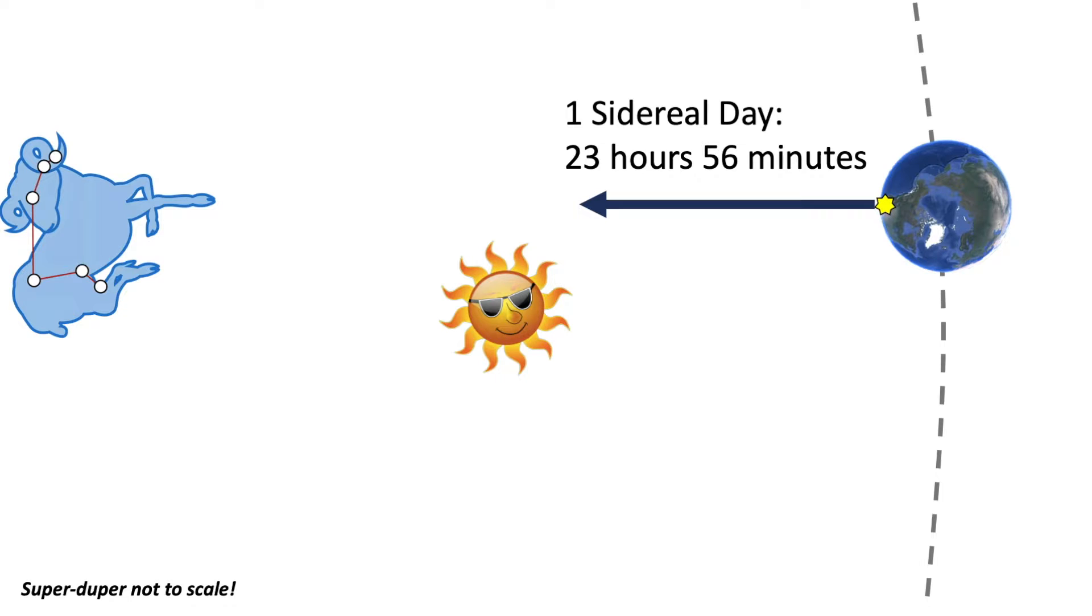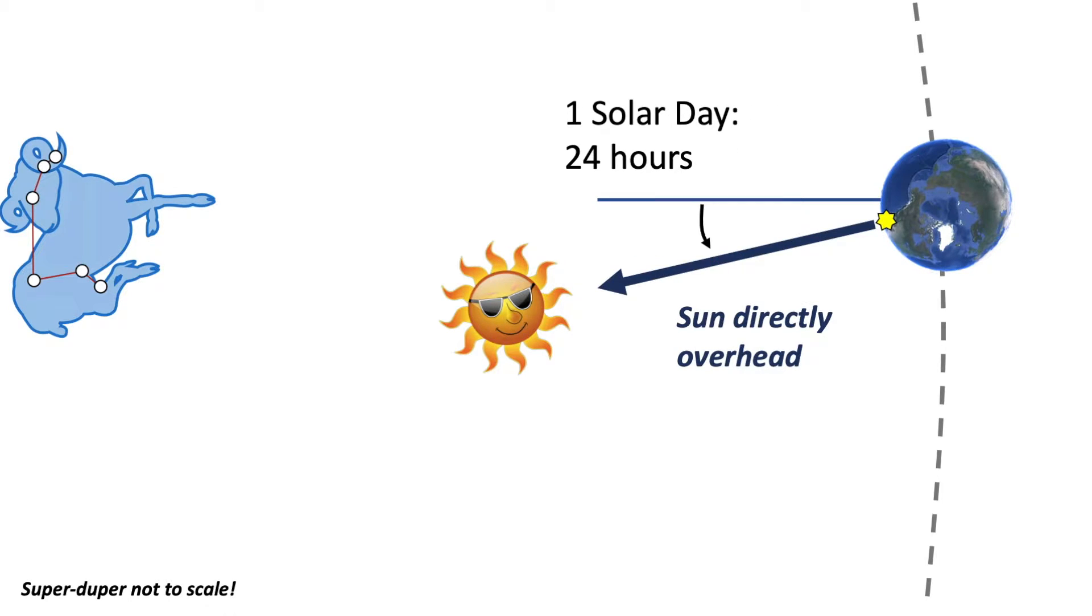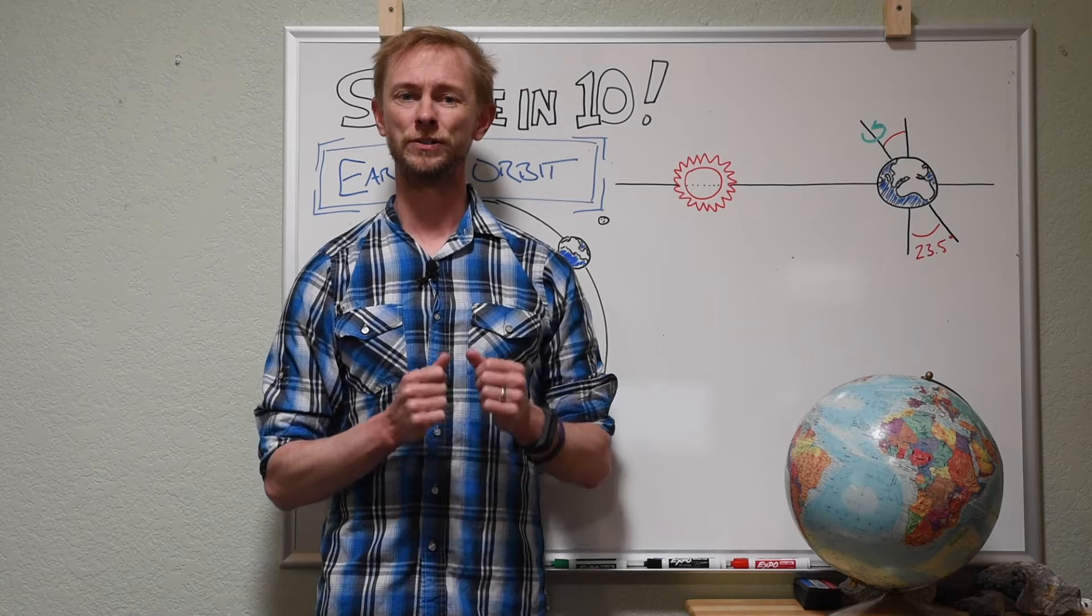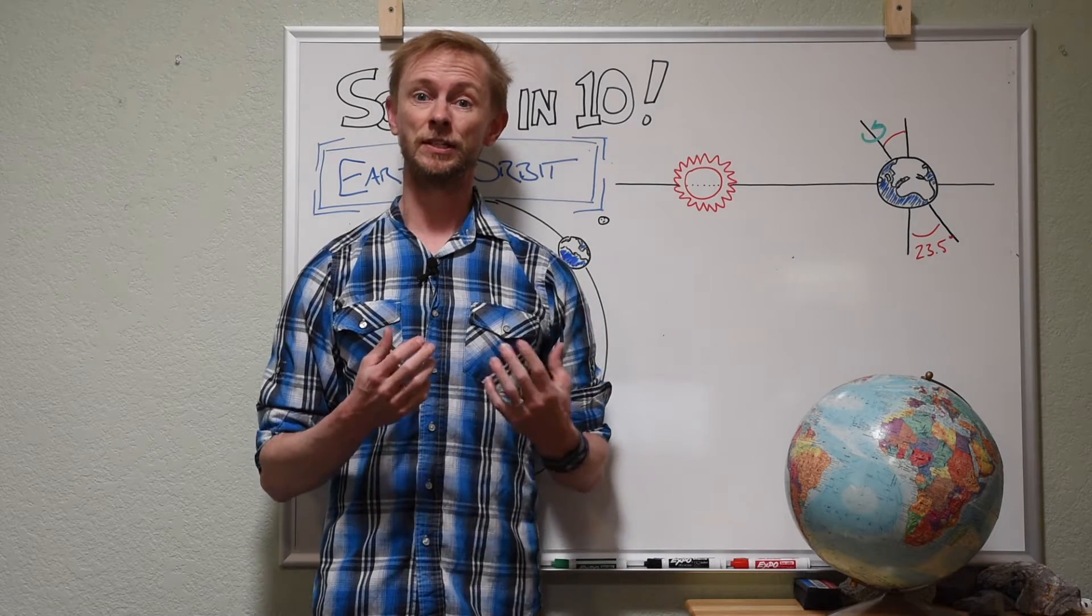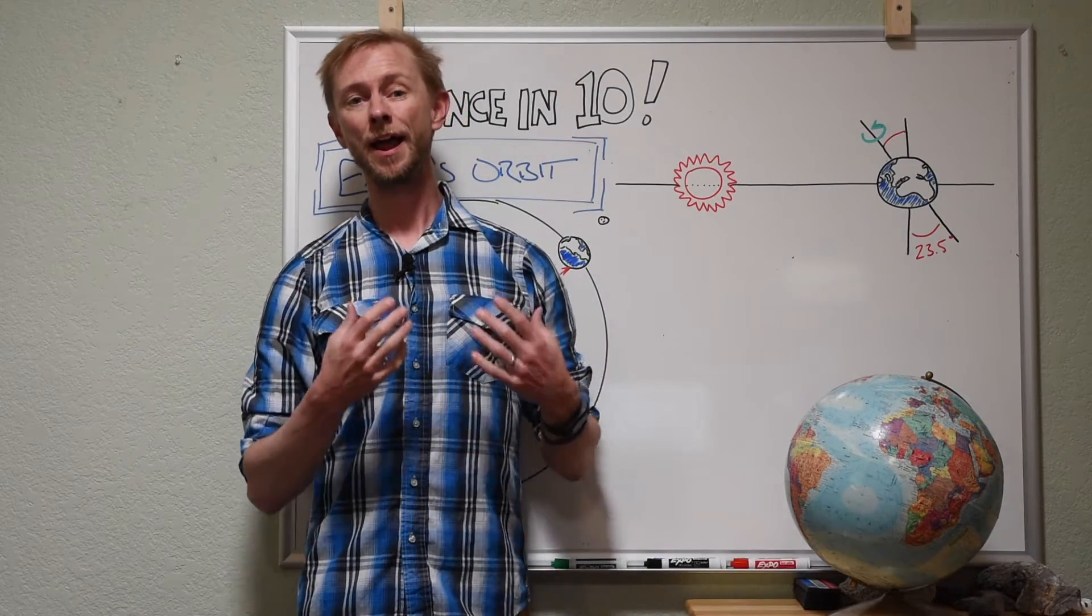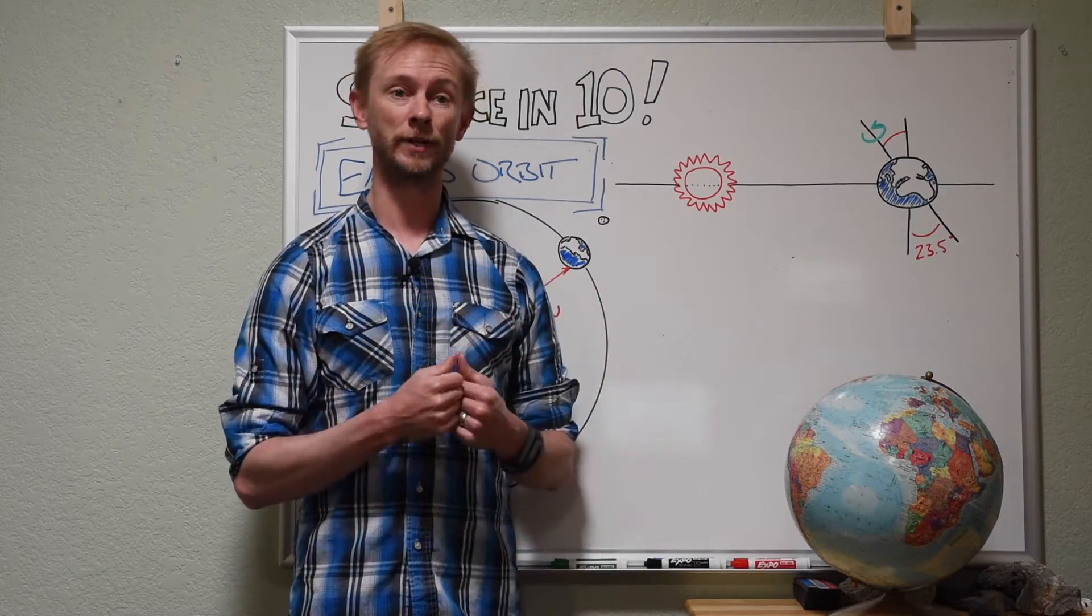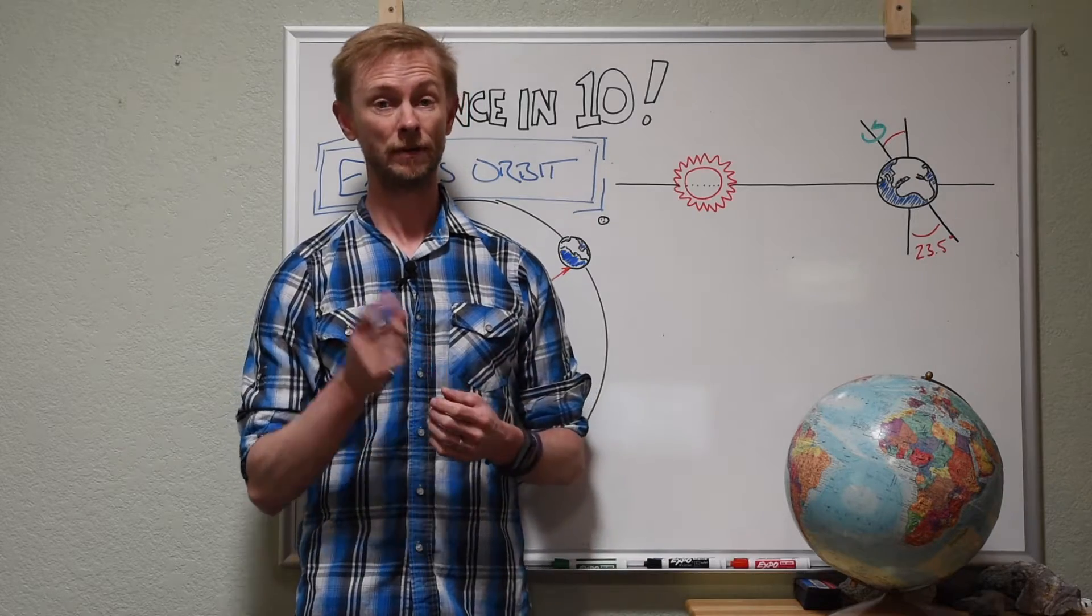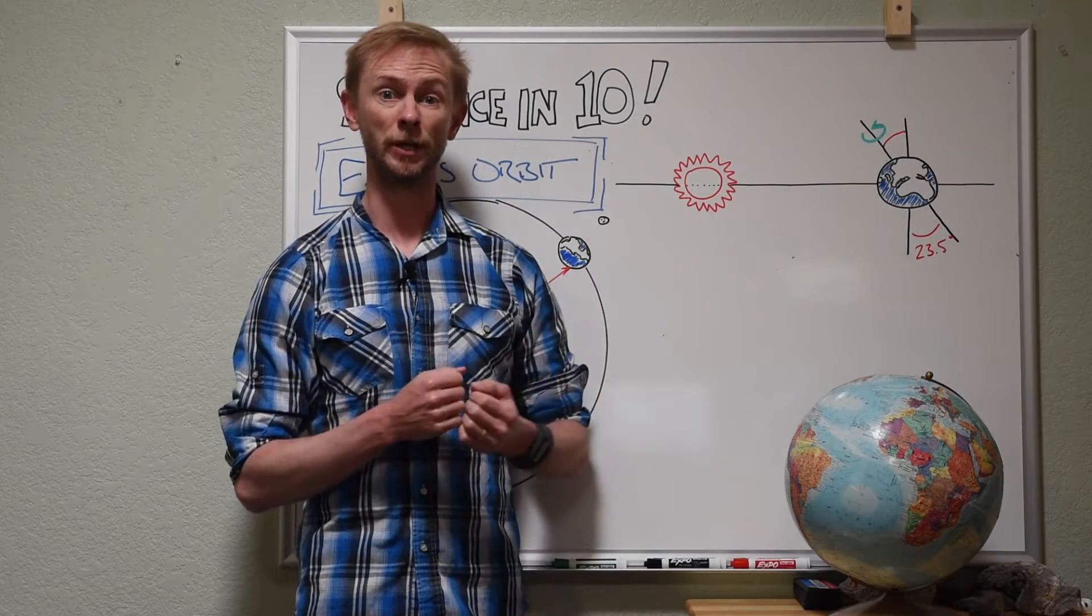However, because the Earth is traveling through space as it orbits the sun, this rotation needs to be just slightly more than 360 degrees. And because the sidereal day is just a little bit shorter than a solar day, every four years we need to add on one additional calendar day to make up for this. February 29th, for a leap year.